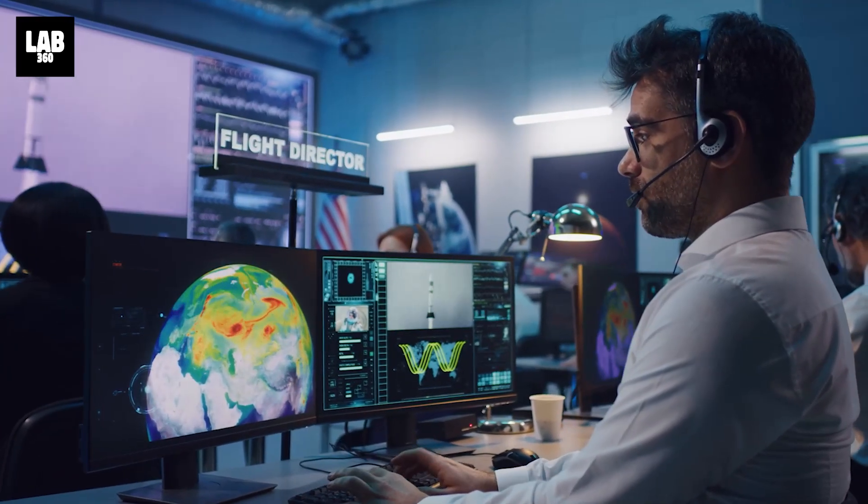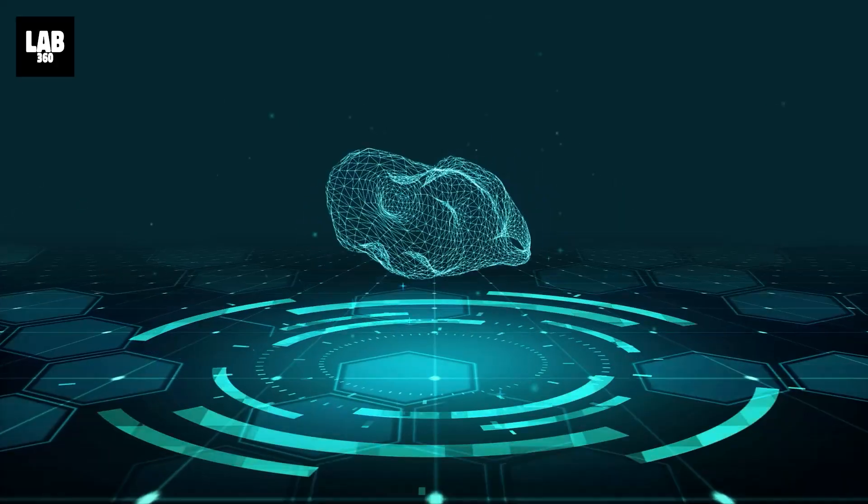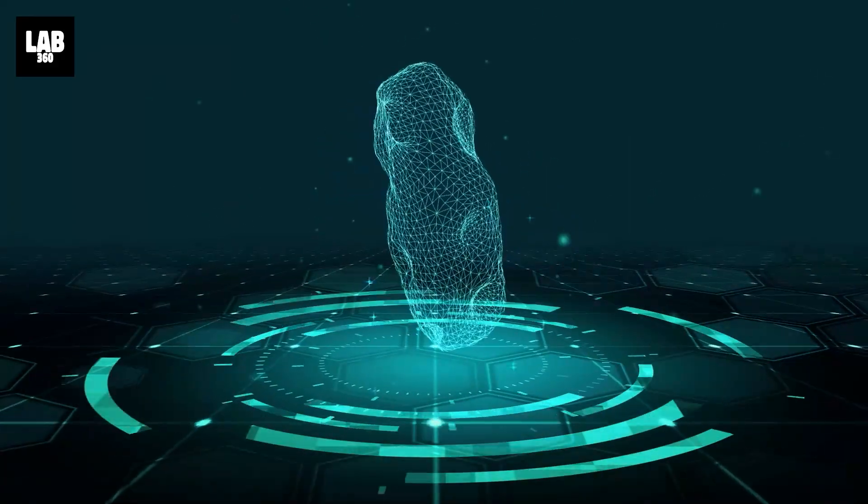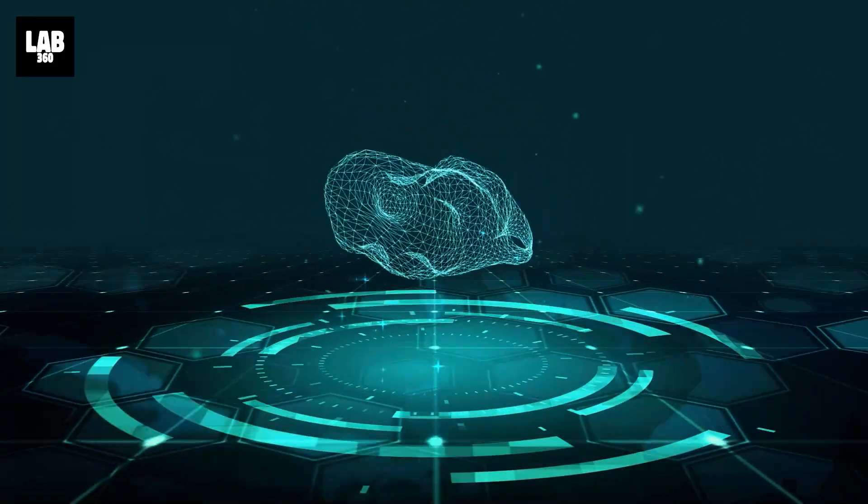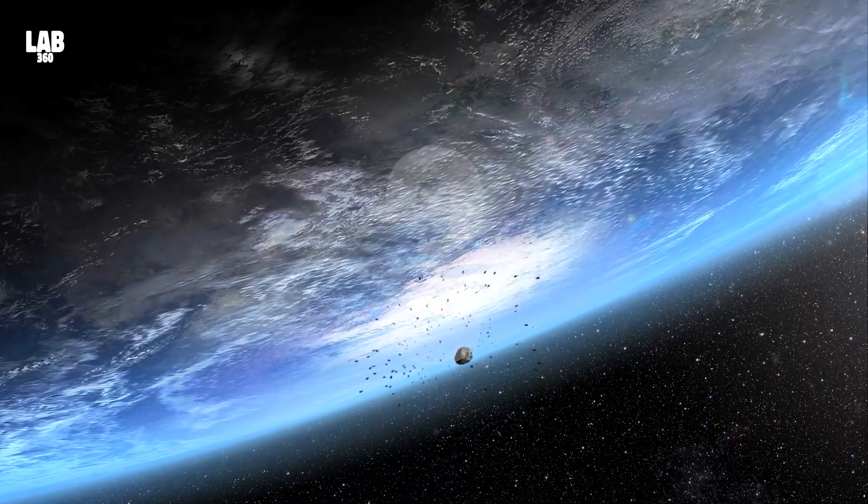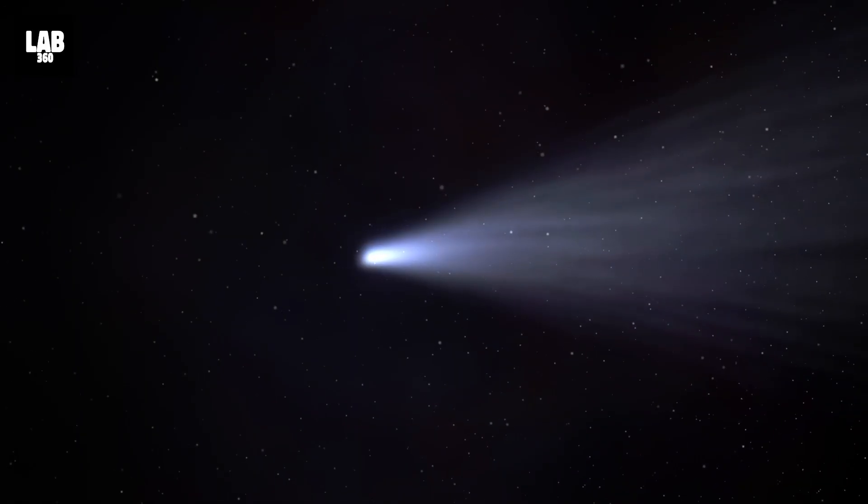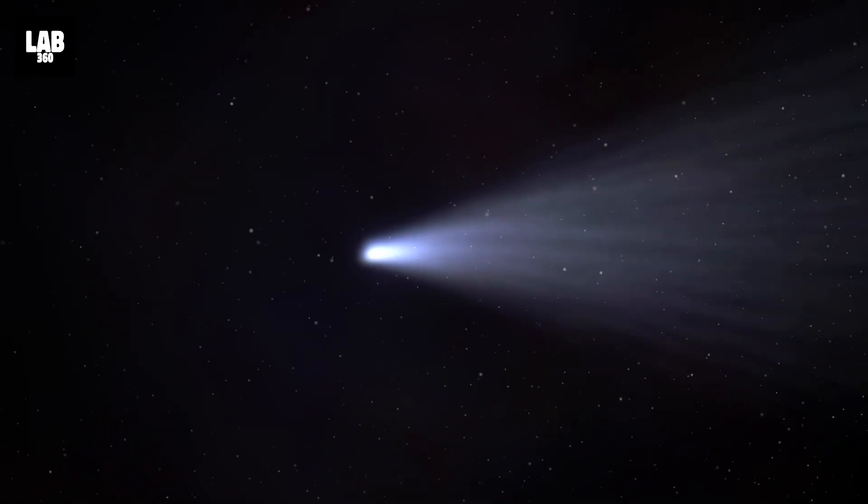The other option, of course, is to wait until another object like Oumuamua comes along and visit that one instead. After all, there could be seven passing through our solar system each year. It could even be that most comets come from other star systems.